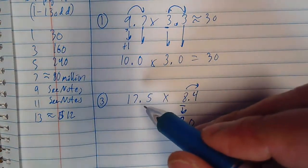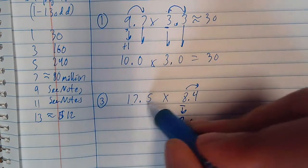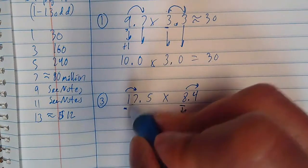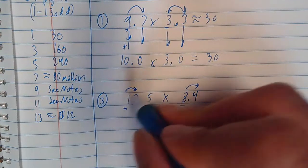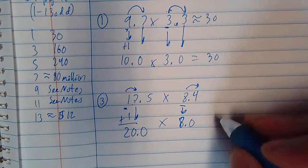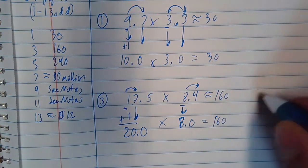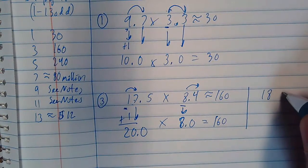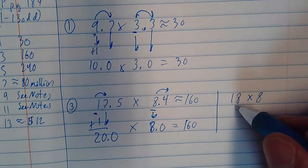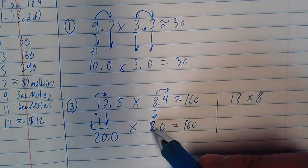Now this one — you want to stay as close to the original as possible. I could look at the ones place and make this 18. But if I look at the tens place, this becomes 20 because 7 is 5 or more. So I add 1, this becomes 2. Now you have 20 times 8, which is 160. And that's what the book said — so this is about 160.